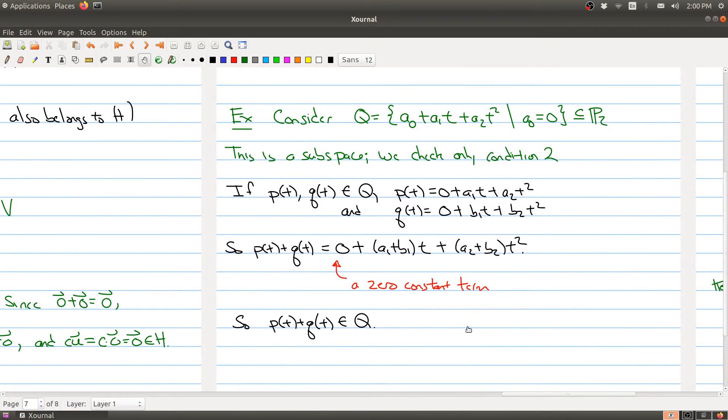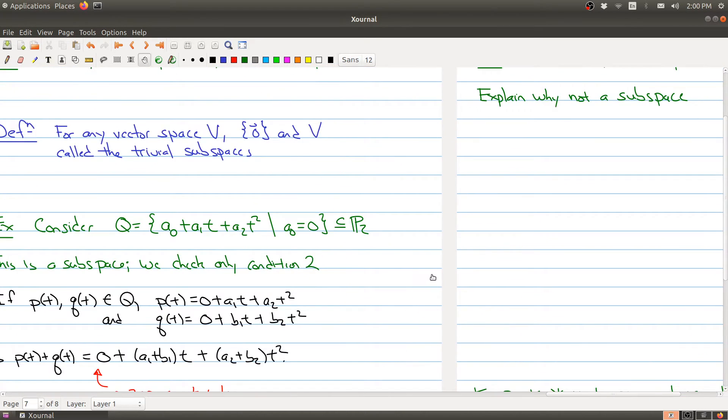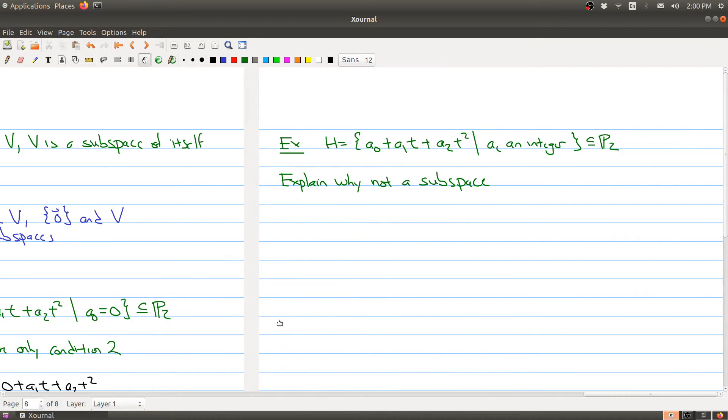Okay, so this gives you an example of a subspace. Let me give you an example of something that is not a subspace. And again, like the example non-example of a vector space, sometimes these are more illuminating. So here I have H containing all the polynomials where each of the coefficients are integers.